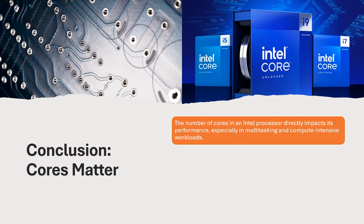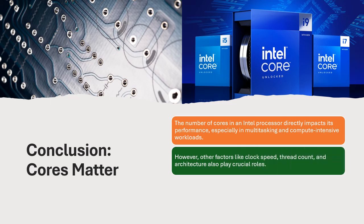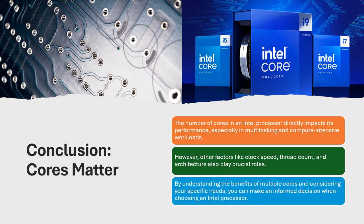3D modeling — 8 to 12 cores accelerate rendering and simulation. Conclusion: the number of cores in an Intel processor directly impacts its performance, especially in multitasking and compute-intensive workloads. However, other factors like clock speed, thread count, and architecture also play crucial roles. By understanding the benefits of multiple cores and considering your specific needs, you can make an informed decision when choosing an Intel processor.